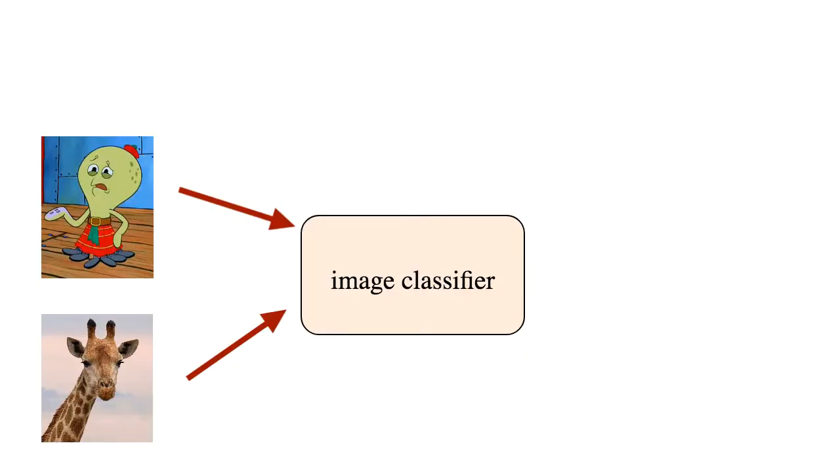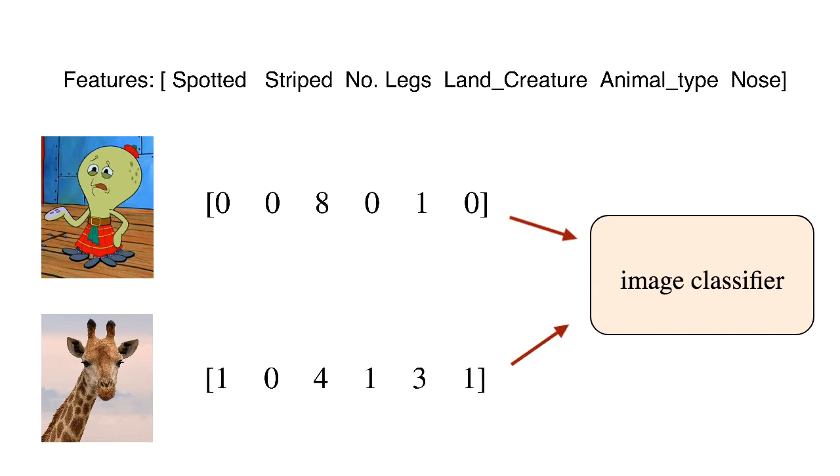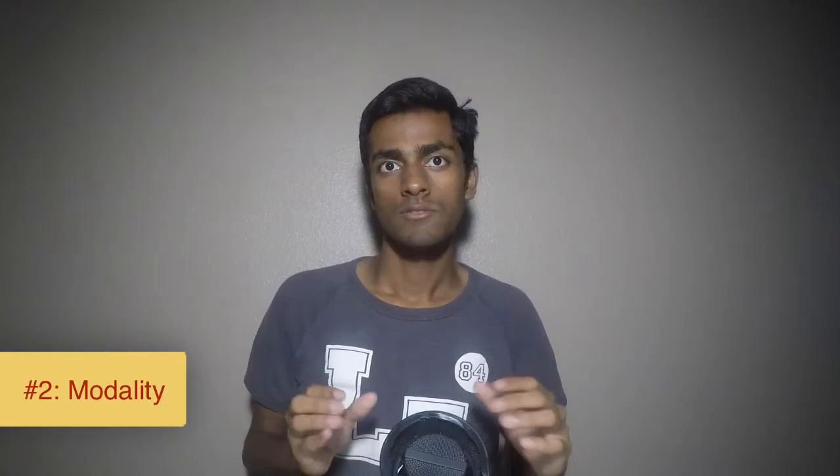Instead of training the classifier with an image, we can input a description of that object. This description can be text, word vectors, or any other input type. And such types are called modalities. So we are now able to train our classifier by describing the objects for which we don't have a labeled image category for. So does that solve our problem? Well, not quite.